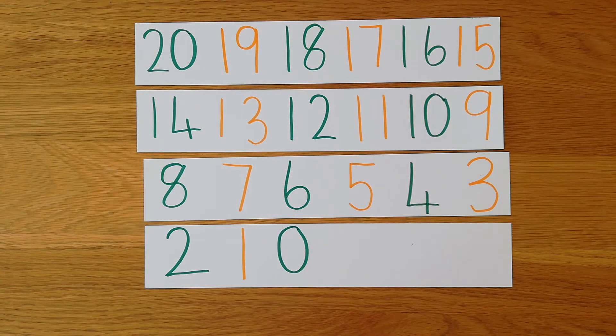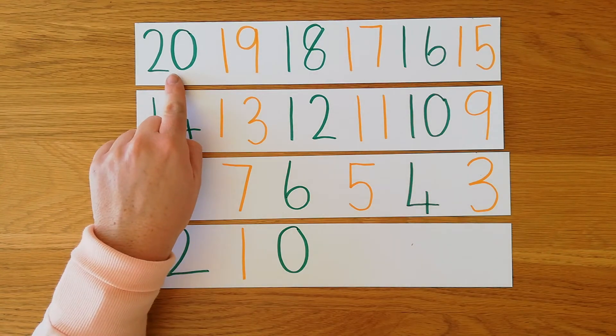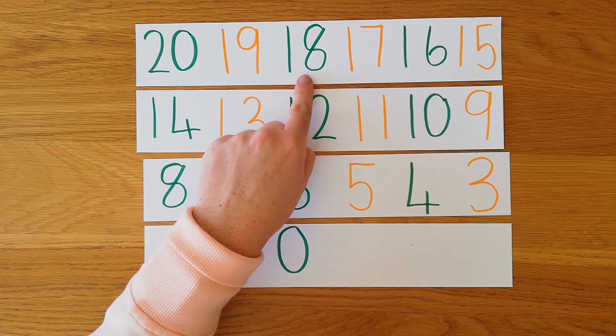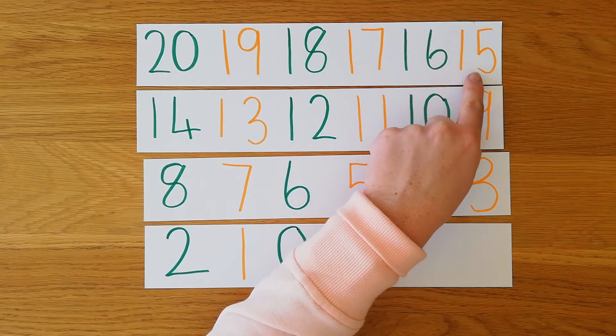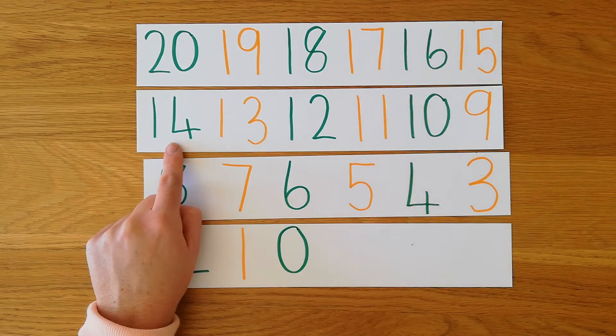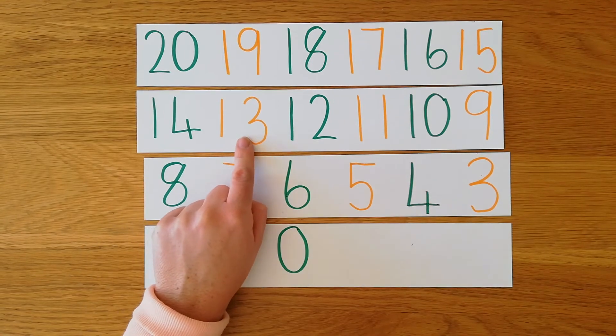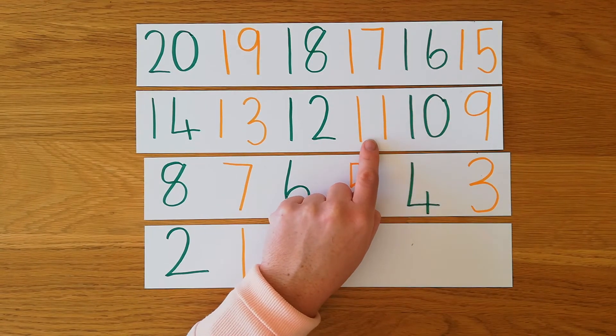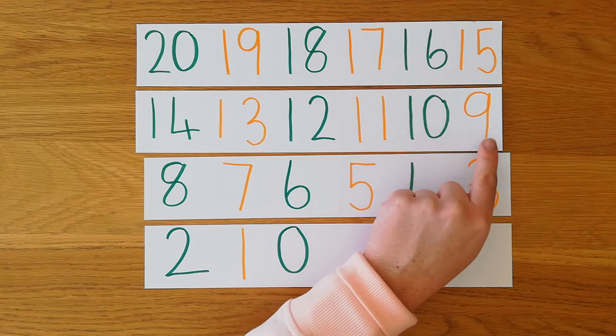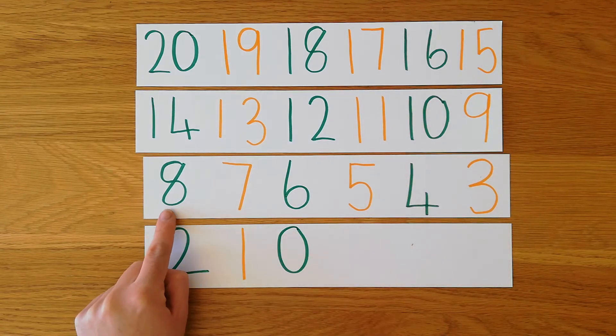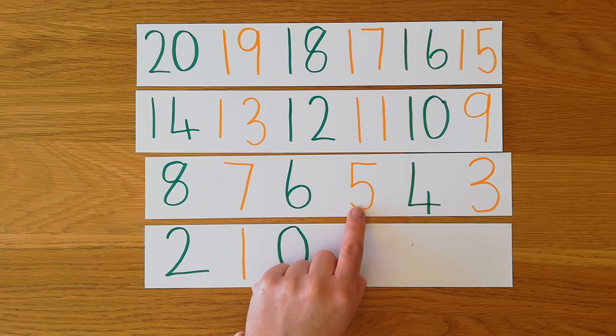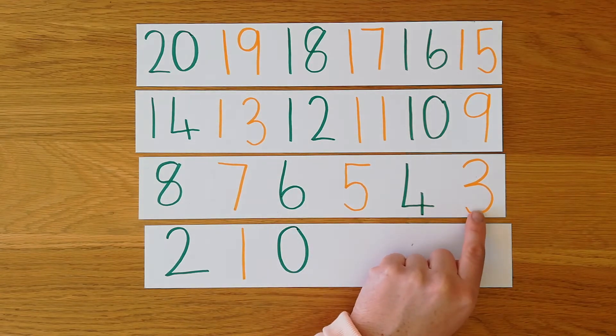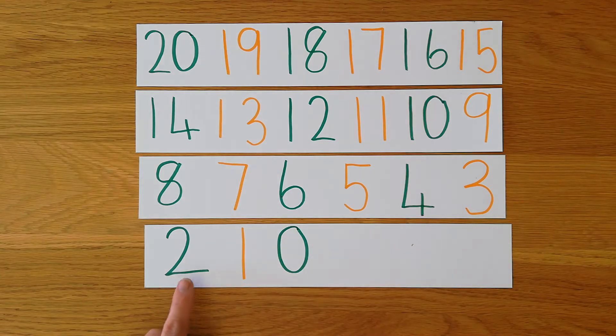Right, let's count all together. 20, 19, 18, 17, 16, 15, 14, 13, 12, 11, 10, 9, 8, 7, 6, 5, 4, 3, 2, 1, 0.